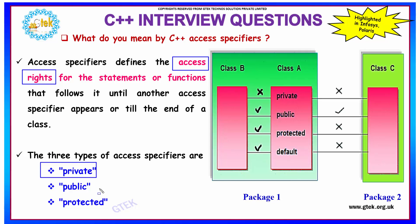The three types are Private, Public, and Protected. These access specifiers mention the access rights for the statements and functions of one class until another access specifier appears or till the end of the class. Elements of class B declared as private cannot be shared by class A or class C, whereas if declared public, they can be shared by A and C.